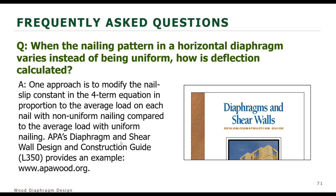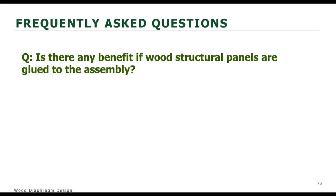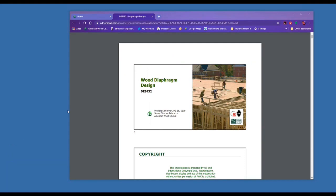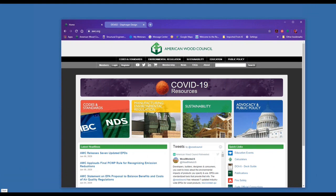You just need to create a username and password at apawood.org to download the publication — it's free. If you just Google the name on their website, it'll come up. Now Lori will field some questions that came in from the audience — there have been a lot of great questions.